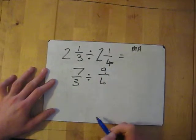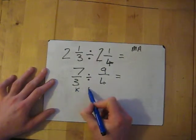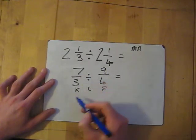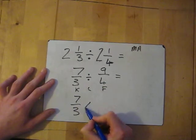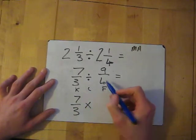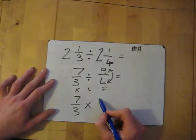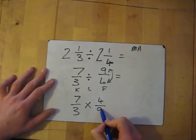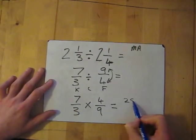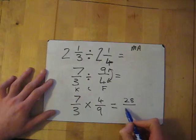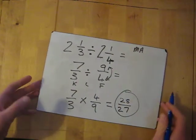Now we need to apply KCF. Keep 7 over 3 the same. Change the divide to multiply. Then flip: the top number goes to the bottom and the bottom number goes to the top, giving us 4 over 9. Then we simply multiply: 7 times 4 is 28, 3 times 9 is 27. And that's it — 28 over 27.